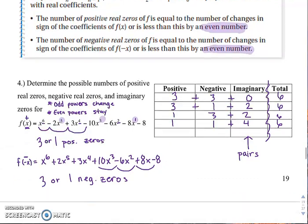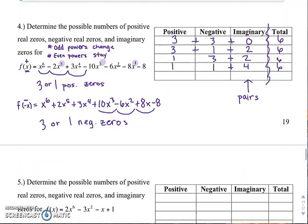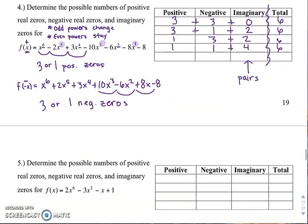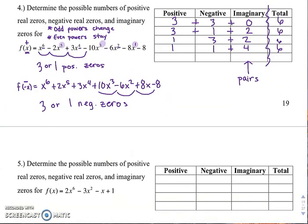Why don't you try the other one? Try 2x to the 6th minus 3x squared minus x plus 1.